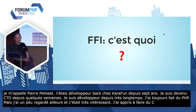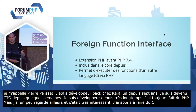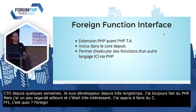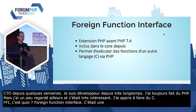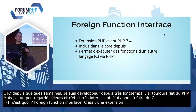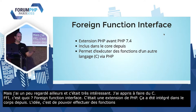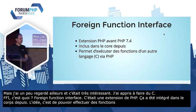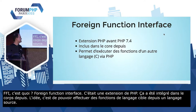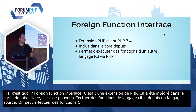FFI, c'est quoi ? FFI, c'est Foreign Function Interface. C'était une extension PHP avant 7.4, ça a été intégré dans le core depuis. L'idée de FFI, c'est de pouvoir exécuter des fonctions d'un langage cible depuis un langage source. Donc en PHP, on va pouvoir exécuter des fonctions C depuis PHP. C'est quelque chose qui est nouveau en PHP, mais ça existe dans plein d'autres langages : en Python, en Ruby, côté Node.js. Même en C++, quand vous utilisez extern C, vous faites du FFI.